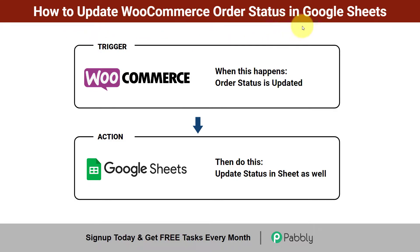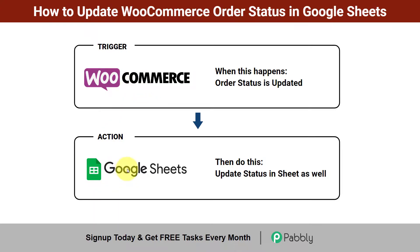How to update the WooCommerce order status in Google Sheets automatically. Let's say some customer has just cancelled an order from your WooCommerce store. You will have to update the status from processing to cancel in both applications individually since you are managing your whole order data there as well. Either you can do it manually or you can create an automation where whenever you update the status in your WooCommerce store, the same changes will be reflected in the Google Sheet automatically.